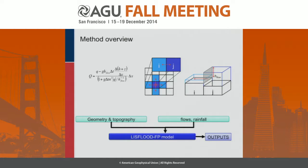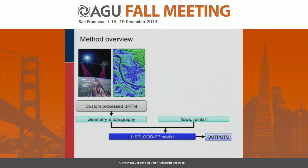I'll just give a brief overview of the method. This is the standard LISFLOOD hydraulic model. It operates over a raster grid — this is a version of the shallow water equations minus convective acceleration written into a really efficient form. Like most hydraulic models, it needs some geometry and topography and some boundary condition forcing, and it takes those in to produce a bunch of outputs. The geometry comes from a custom-processed SRTM terrain dataset and some remote sensing river widths. I'll come on to how we do the channel geometry in a moment.